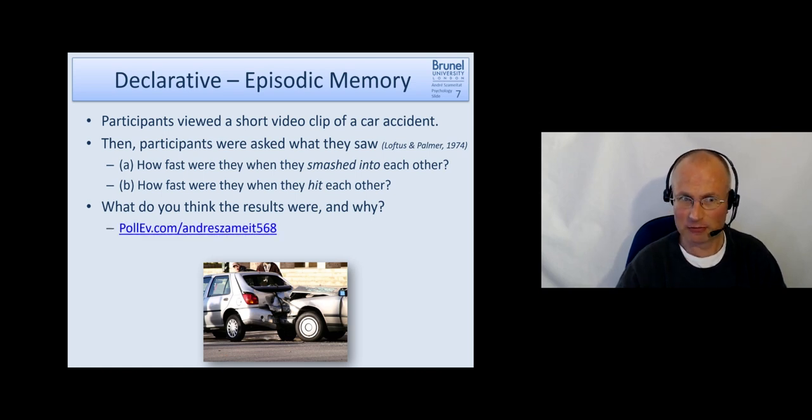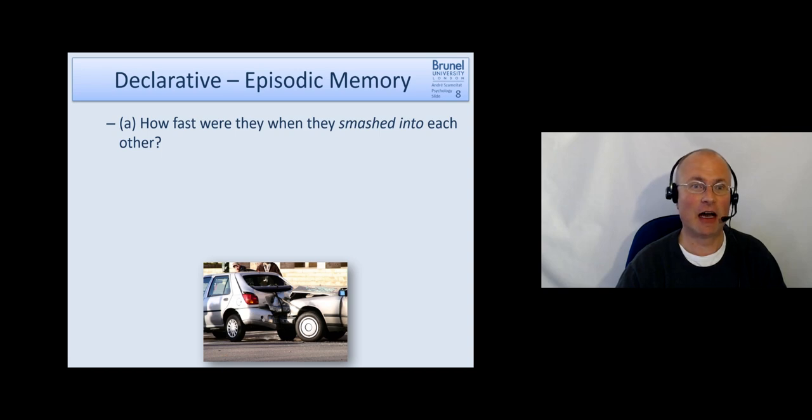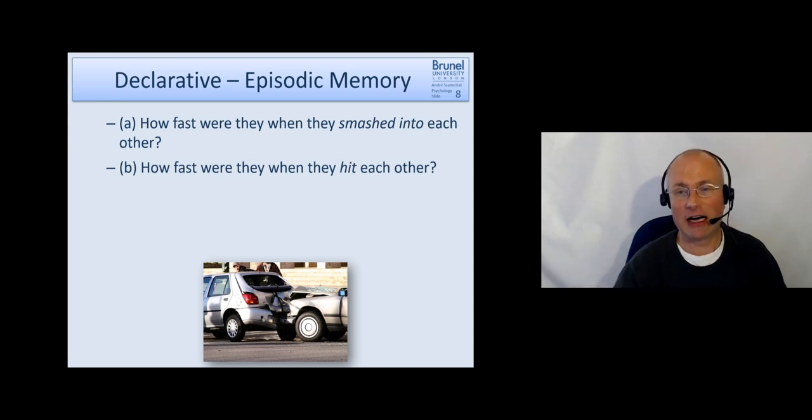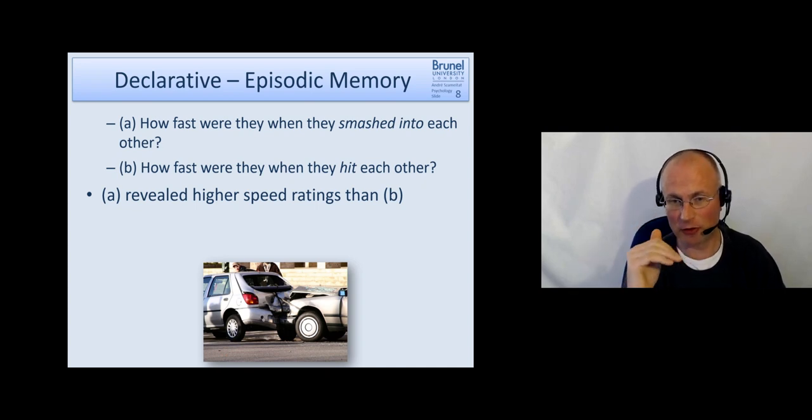What they found out is that 'how fast were they when they smashed into each other' revealed the highest speed rating. When you ask for 'hit,' then you get lower speed ratings. If you say something like 'how fast were they when they contacted each other,' you get the lowest speed rating. The estimates differed from the highest to the lowest by around 10 miles per hour, which is a lot and can make the difference between saying you were speeding or you were well within the speed limits when you are driving within the town.